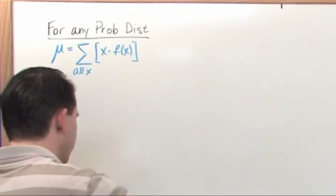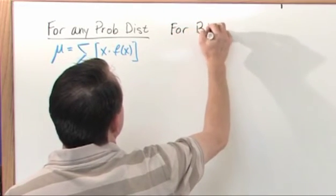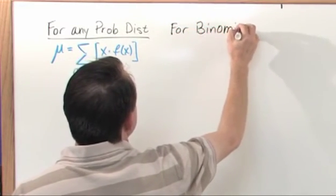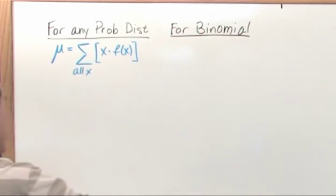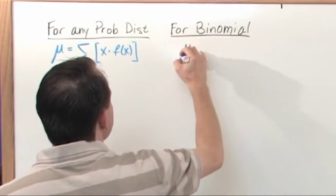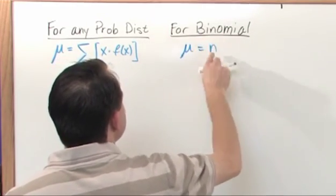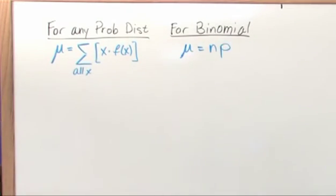Now, I'm going to draw an equivalent table over here for the binomial. Things actually get a little bit simpler. That's a good thing. The mean can be simplified from this expression for the binomial distribution. It's just equal to n, the number of trials, times the probability of success. That's it.